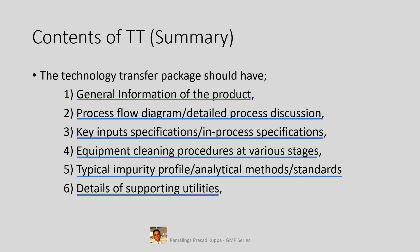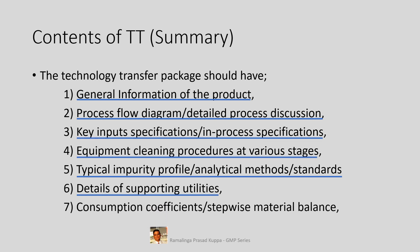Details of supporting utilities should include heating and cooling requirements, which should be given and discussed. Consumption coefficients — stepwise material balance — should be included. Consumption coefficient means the amount of each input required per kg of the final product. Those details must be added in this section. Material balance covers the input and output, theoretical and practical yields at various stages, and all these details should be provided here.